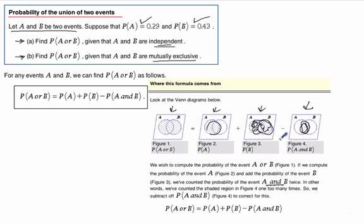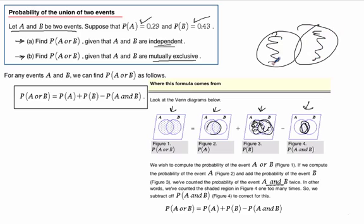But if we subtract the probability of A and B, then we're going to end up with only the probability of A or B, which would be this. It would just be these areas. This middle section would be blank. So that's where this formula comes from.